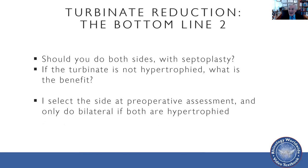Should you do both sides if you're doing a septoplasty? If the turbinate's not hypertrophied, what benefit are you going to get from removing excess tissue? I think you should do surgery on the hypertrophied side. With a very deviated septum, one side is actually small with no extra tissue to remove, while the other side is quite hypertrophied. If you have an S-shaped septal deviation or the deviation is more posterior with both turbinates hypertrophied, bilateral reductions or resections are fine. I select the side at the preoperative assessment and do bilateral if both are hypertrophied. It's important not to make this assessment intraoperatively — when you get the patient decongested you can't really assess the level of hypertrophy.